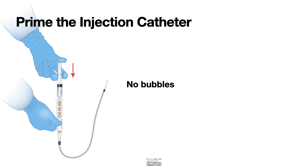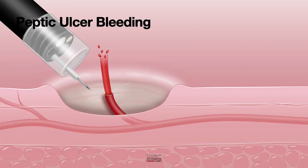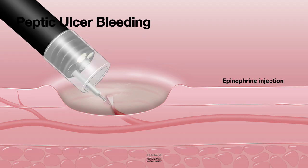Let us look at the various indications where epinephrine has been shown to be useful. First, peptic ulcer bleeding. For peptic ulcer bleeding, you use a 1 in 10,000 dilution, go to the site, and inject epinephrine in and around the vessel. You can inject 5 to 10 ml to control the bleeding. However, the oriental group have shown that injecting 13 to 20 ml is significantly more effective at controlling bleeding and preventing re-bleeding.